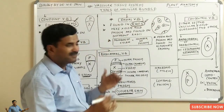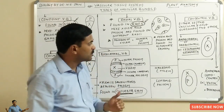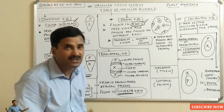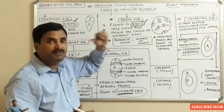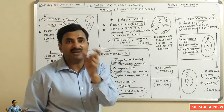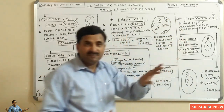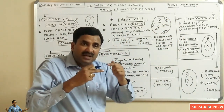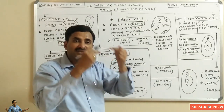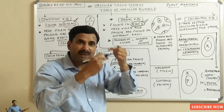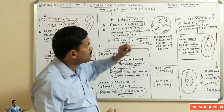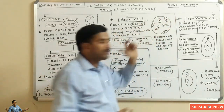Now coming to the third type, which are a little bit rare — the concentric vascular bundles. In a concentric vascular bundle, either of the vascular tissues surrounds the other. This means either the xylem is surrounded by the phloem, or the phloem is surrounded by the xylem. Both conditions may be present. Xylem is also called Hadrom and phloem is also called Leptom — these terms help name the subtypes.